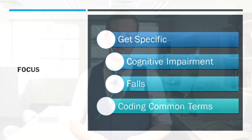Today we're going to talk about getting specific around some conditions within geriatrics. We'll explore cognitive impairment issues, particularly how we document for dementia, mild cognitive impairment, or delirium. We'll also talk about falls and some common terminology that comes up a lot in the older age group in terms of acute admissions.